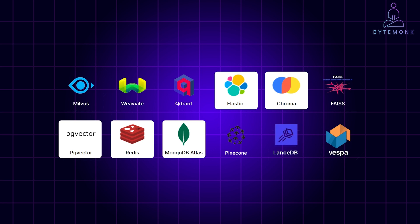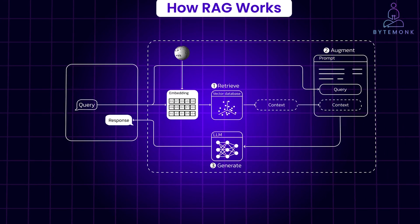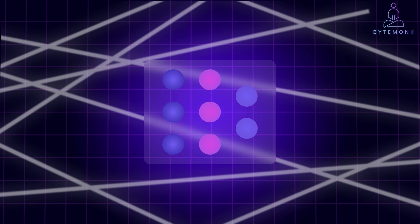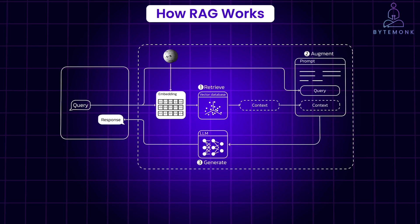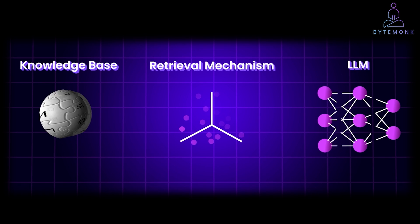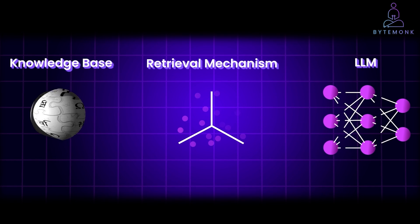Vector databases are crucial in the evolution of generative AI, primarily because they supercharge a technique called RAG, or Retrieval Augmented Generation. RAG acts as a bridge connecting the creative power of generative AI models like GPT-4 or LLaMA with the vast and up-to-date knowledge stored in external sources. This empowers AI to generate responses that are not only creative, but also informed and contextually relevant. But more on the inner workings of RAG in my next video.